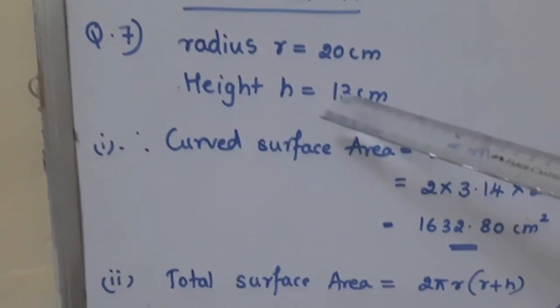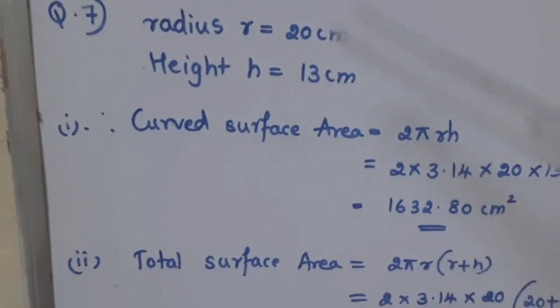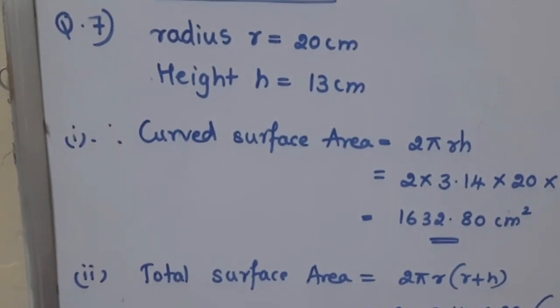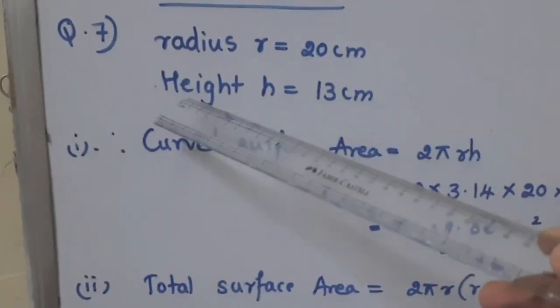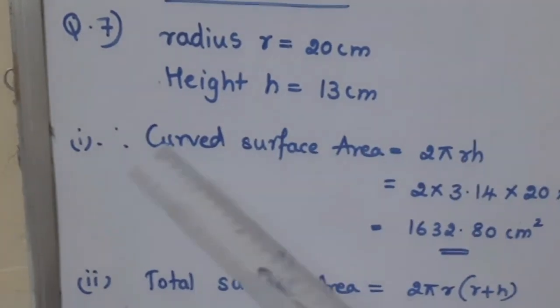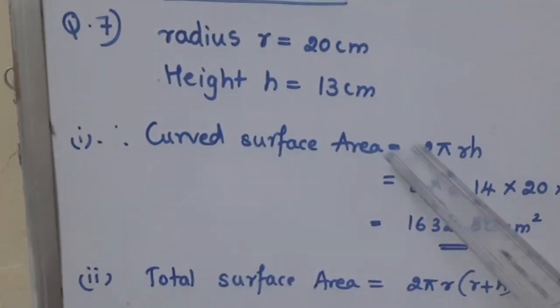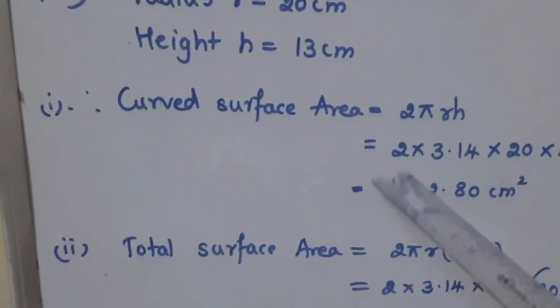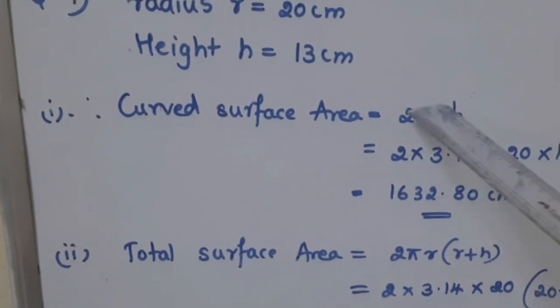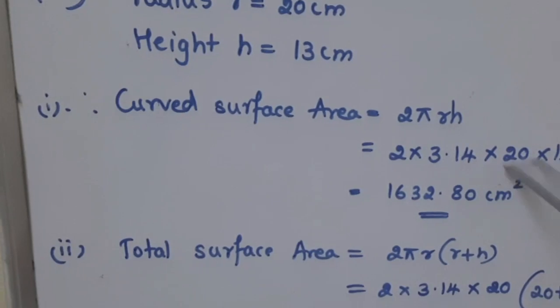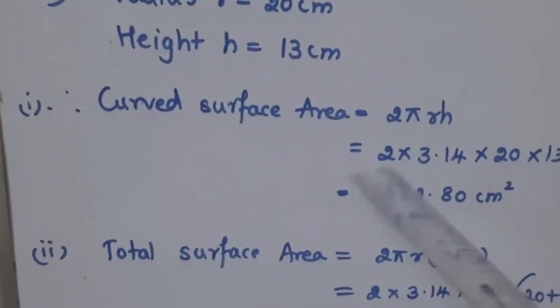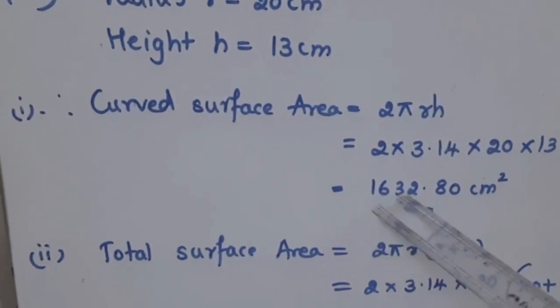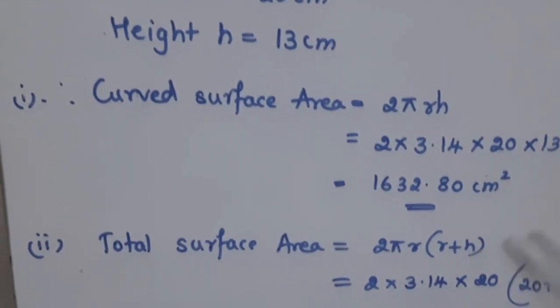If radius is given and height is given, we have to directly write the equations then substitute the value of R and H. Radius R is equal to 20cm, height H is equal to 13cm. First thing we have to find is curved surface area of the cylinder which is equal to 2πRH, which is equal to 2 multiplied by π is 3.14 into R that is 20 into H that is 13, which is equal to 1632.80 cm square.